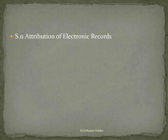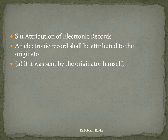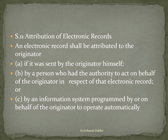Now, let us understand about the attribution of electronic records which is discussed under Section 11. According to Section 11, an electronic record shall be attributed to the originator if it was sent by the originator himself, by a person who had the authority to act on behalf of the originator in respect of that electronic record, or by an information system programmed by or on behalf of the originator to operate automatically.